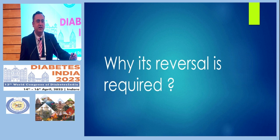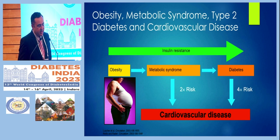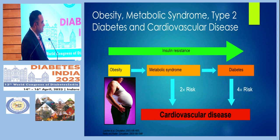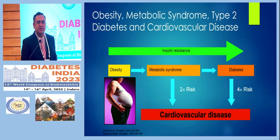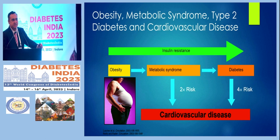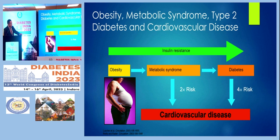Why is it required? Why are we discussing reversal of Metabolic Syndrome? Because obesity, Metabolic Syndrome, and Type 2 Diabetes and Cardiovascular Disease are all correlated together. Once there is insulin resistance and obesity, Metabolic Syndrome and Diabetes together carry two to four times more risk of Cardiovascular Disease. Ultimately, we want to give our patients complication-free, long-term healthy survival by preventing Cardiovascular Disease.